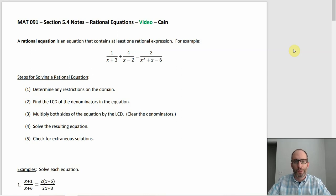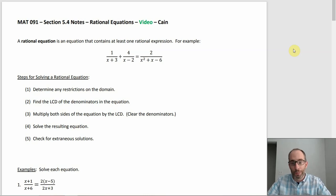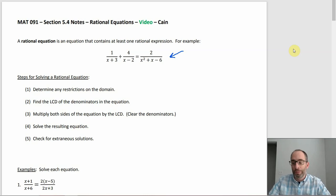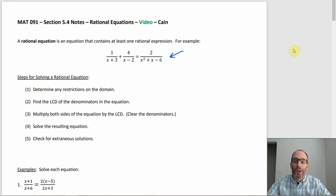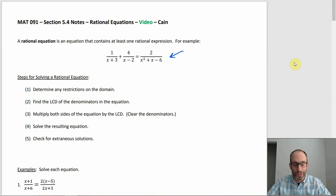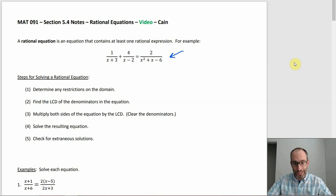Section 5.4 is about how to solve a rational equation, which is just an equation that has a rational expression in it, or more often, multiple. Like this one right here that I put in as the example — that's got three. And usually that's what you end up with, two or three. Another thing going on with that example: if you look at the denominators, the denominator of the expression on the right is the product of the two denominators on the left. That also has a tendency to show up, especially in this section.